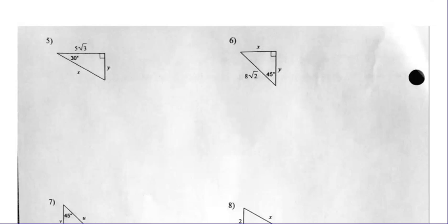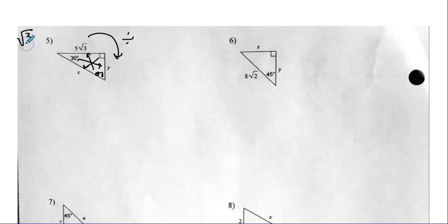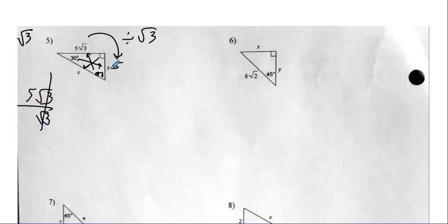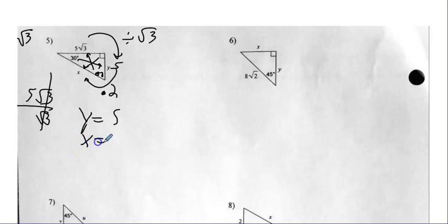Number five — here's my hypotenuse, there's my short leg. This is 60, so I have the long leg. What do I always want to get back to? The short leg. From longer to shorter I'm getting smaller, so I divide. My magical radical here is radical three. So I do five radical three divided by radical three — cancel. Y is five. And how do I go from the short leg to the hypotenuse? I'm getting bigger, so I multiply by two. So Y is five and X is 10.